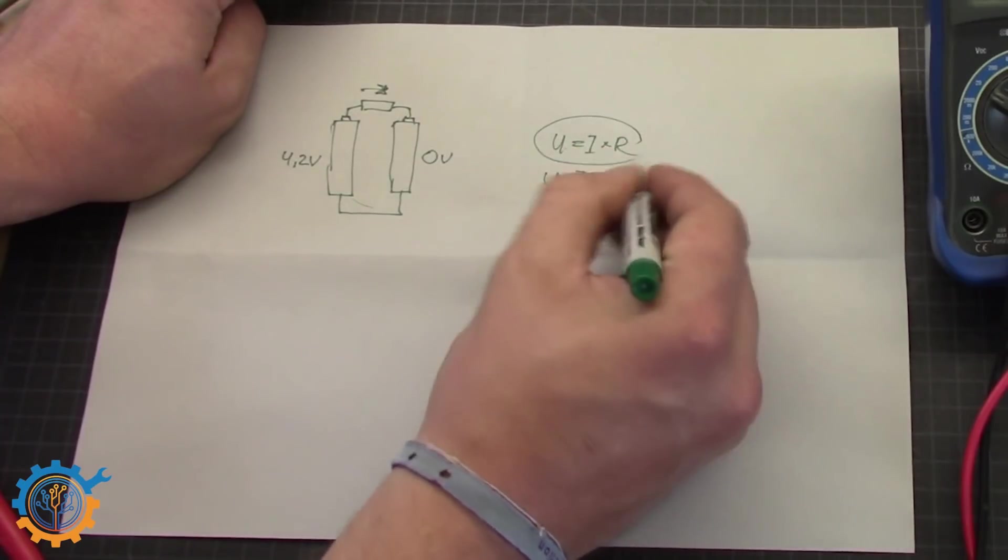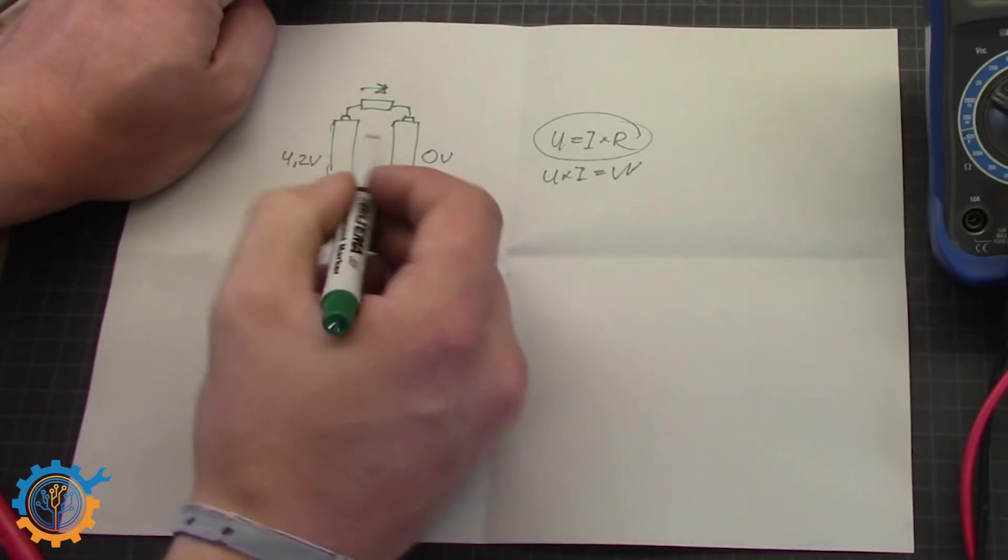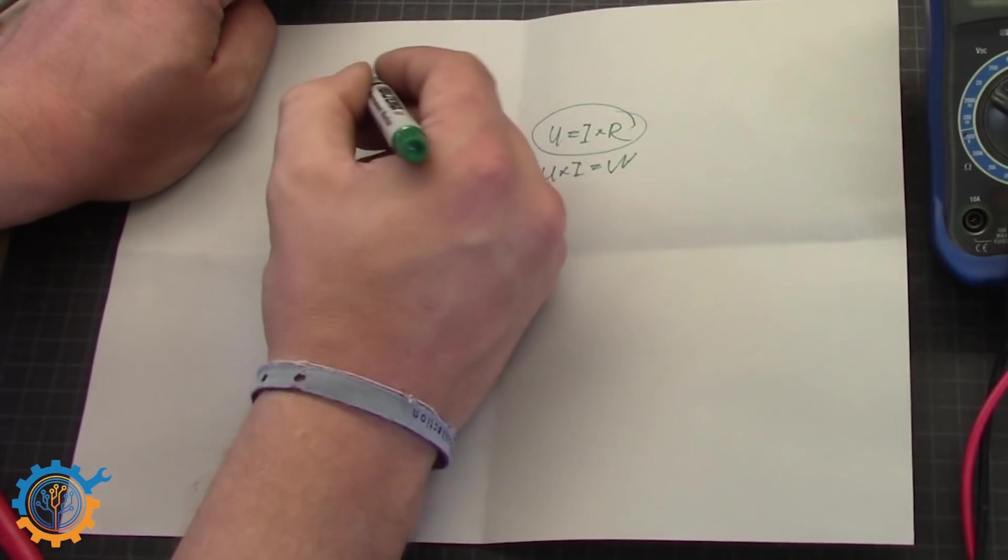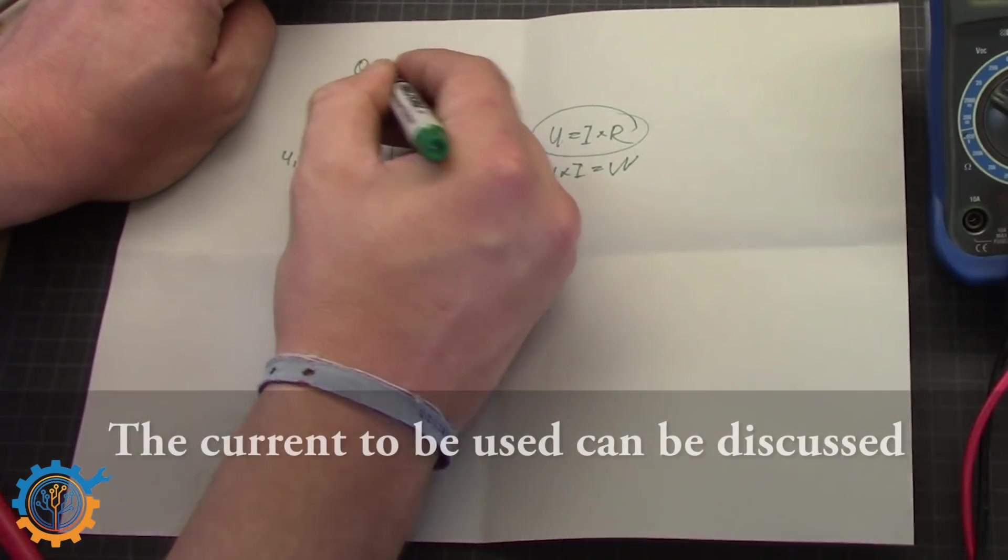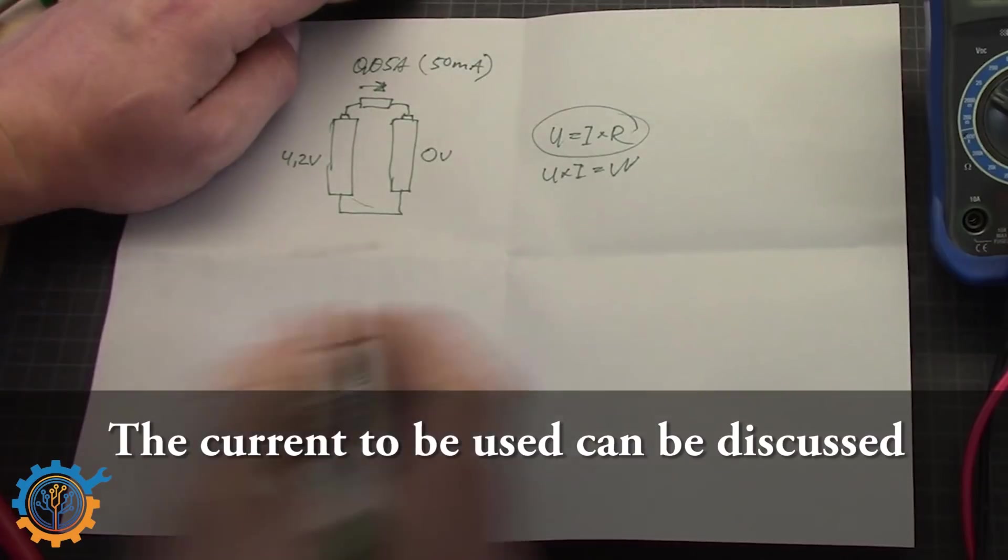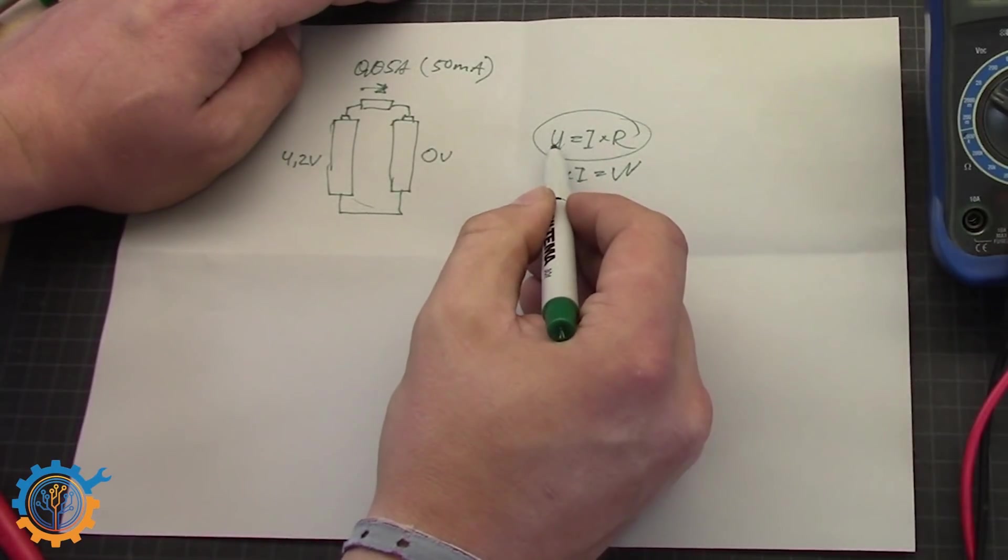We are going to limit the current to somewhere around 0.05A. So basically we know the voltage. We know that the maximum drop that we will have is 4.2V.